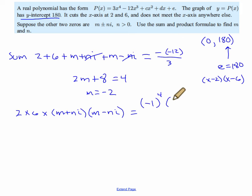So that's over 3. And if we clean all this up, we get 12 times, well we know m is negative 2, so that's negative 2 plus n i times negative 2 minus n i, and this turns out to be equal to 60.